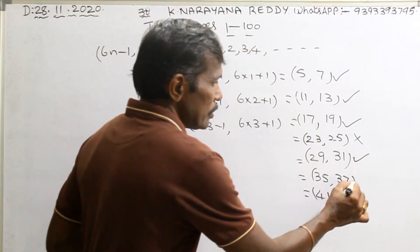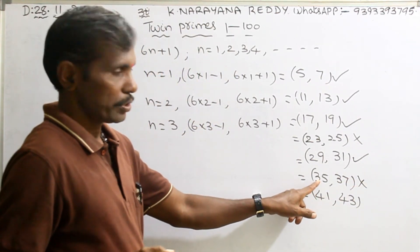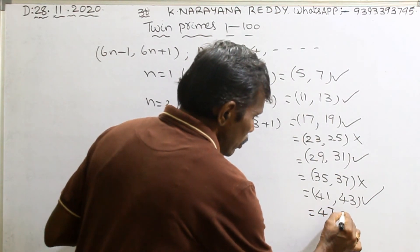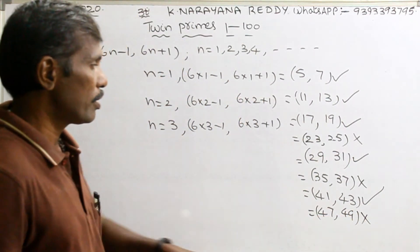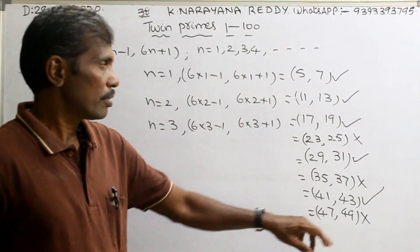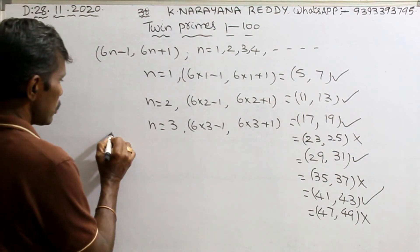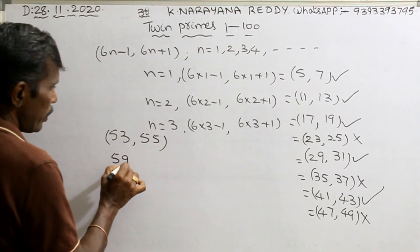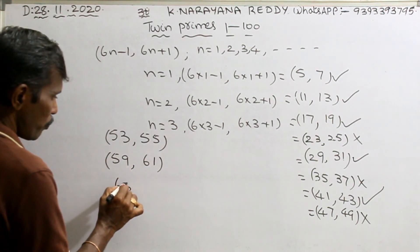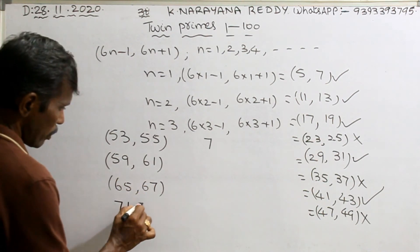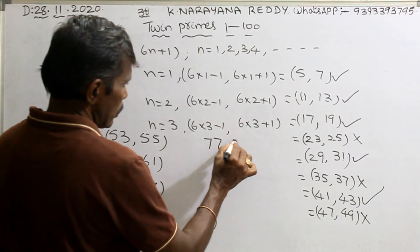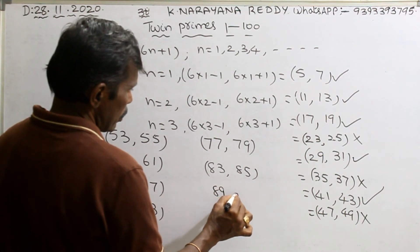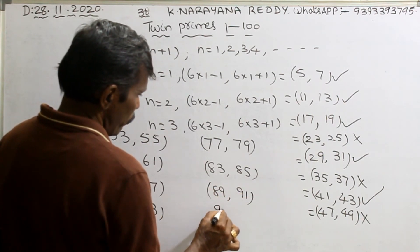After 47, add 6 to get 53 and 55. Then (59, 61). Add 6: (65, 67). Then (71, 73). Add 6: (77, 79). Then (83, 85). Then (89, 91). Then (95, 97). These are all the pairs generated by the formula from 1 to 100.